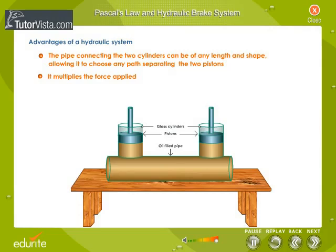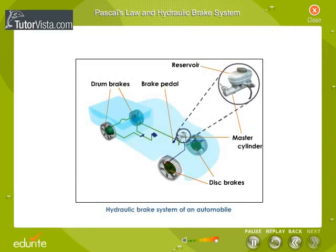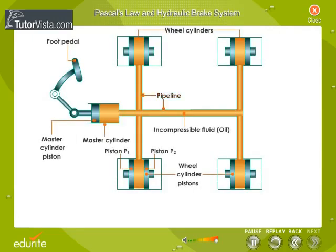Another advantage of a hydraulic system is that it multiplies the force applied. Here you can see the hydraulic brake system of an automobile. It consists of a pipeline containing fluid, one end of which is connected to the master cylinder fitted with the piston attached to the foot pedal. The other end of the pipeline is connected to the wheel cylinder having two pistons P1 and P2 attached to the brake shoes. The area of cross section of the wheel cylinder is greater than the area of cross section of the master cylinder.